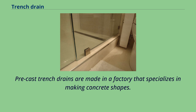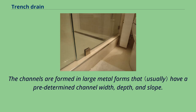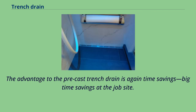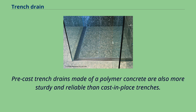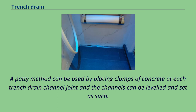Precast trench drains are made in a factory that specializes in making concrete shapes. The channel pieces range in width and length, with larger channels requiring heavy equipment to move them; however, most channels can be picked up and moved easily by hand. The channels are formed in large metal forms with a predetermined channel width, depth, and slope. A metal frame is attached to the form and concrete is poured and finished in a factory atmosphere. The advantage of precast trench drains is significant time savings at the job site. Once a trough is dug, precast trench sections can be quickly installed through numerous methods, including a paddy method using clumps of concrete at each channel joint to level and set the channels.